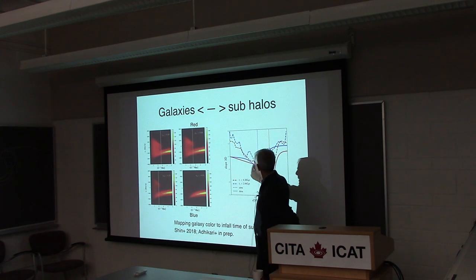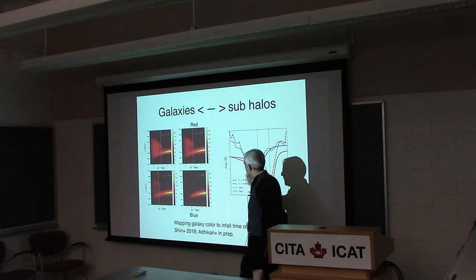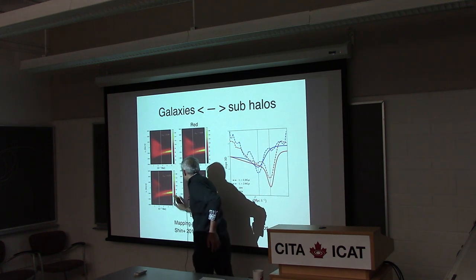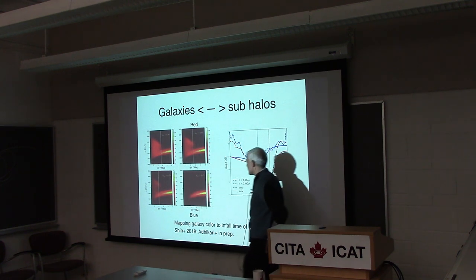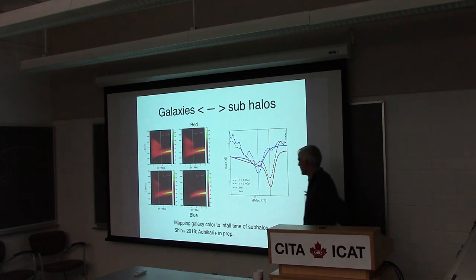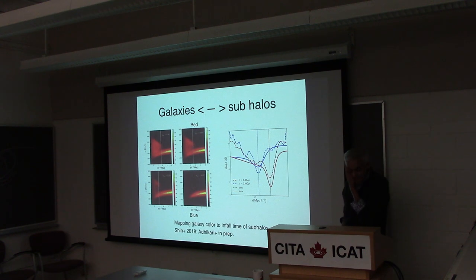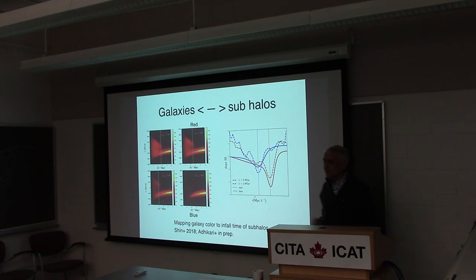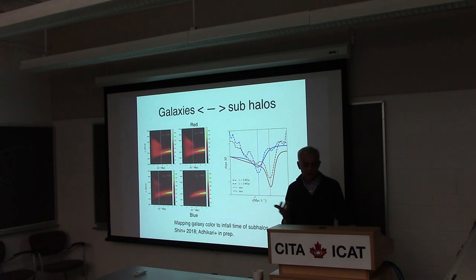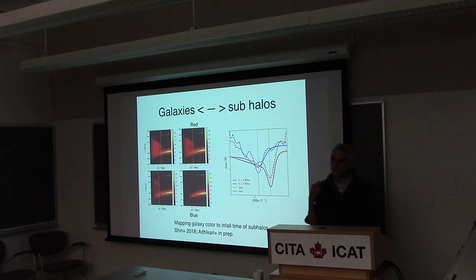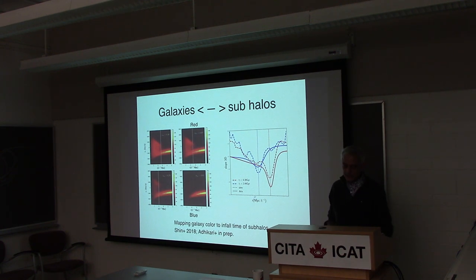We have two populations of galaxies that map onto subhalos. Some are not actually splashback — they're galaxies that haven't even made it to pericenter. We're starting to fit models of quenching with parameters like quenching time and in-fall time, looking at different splits of galaxies in color and magnitude.